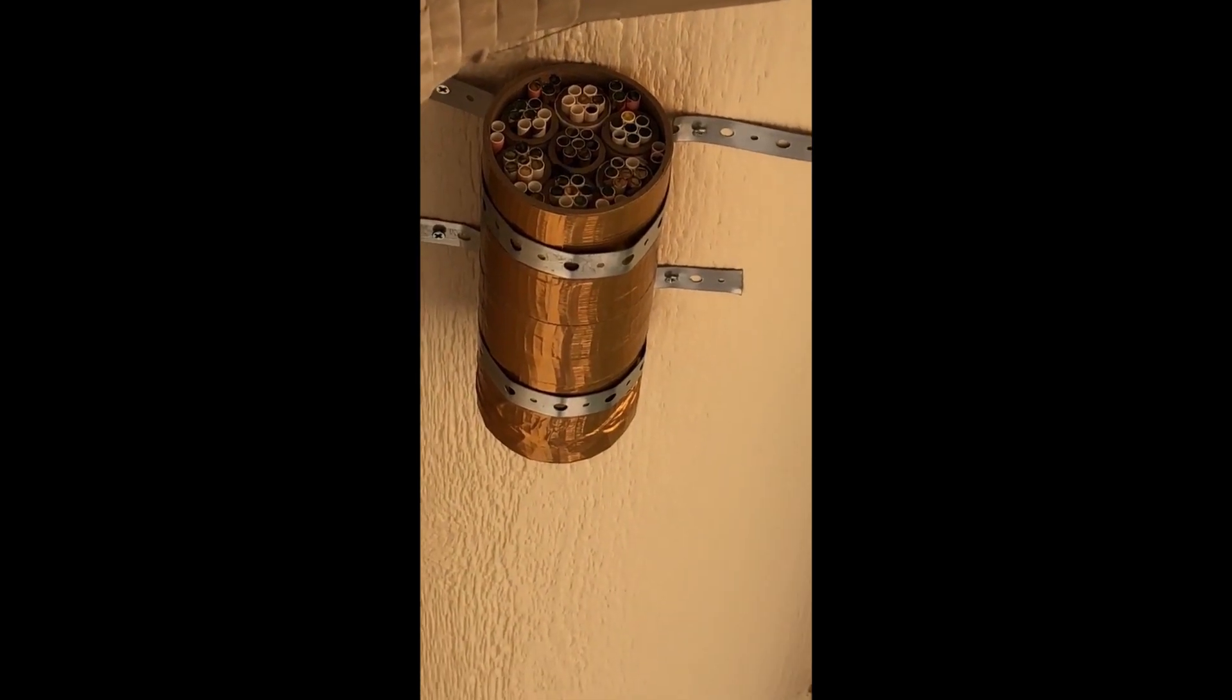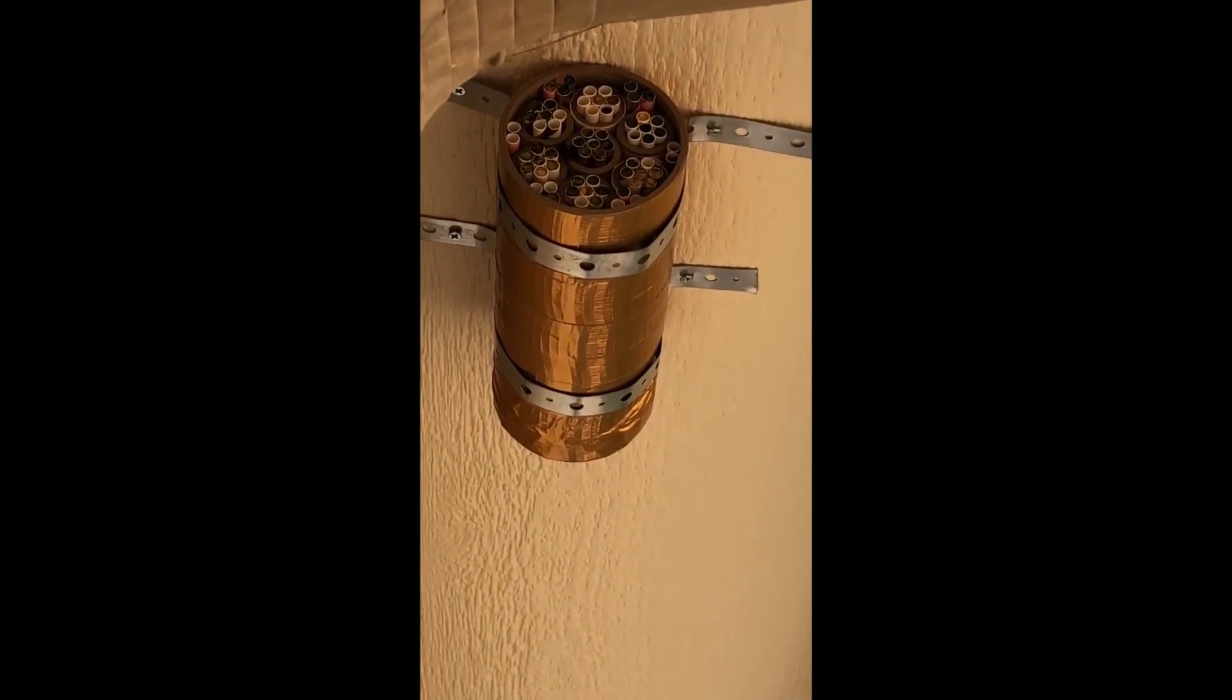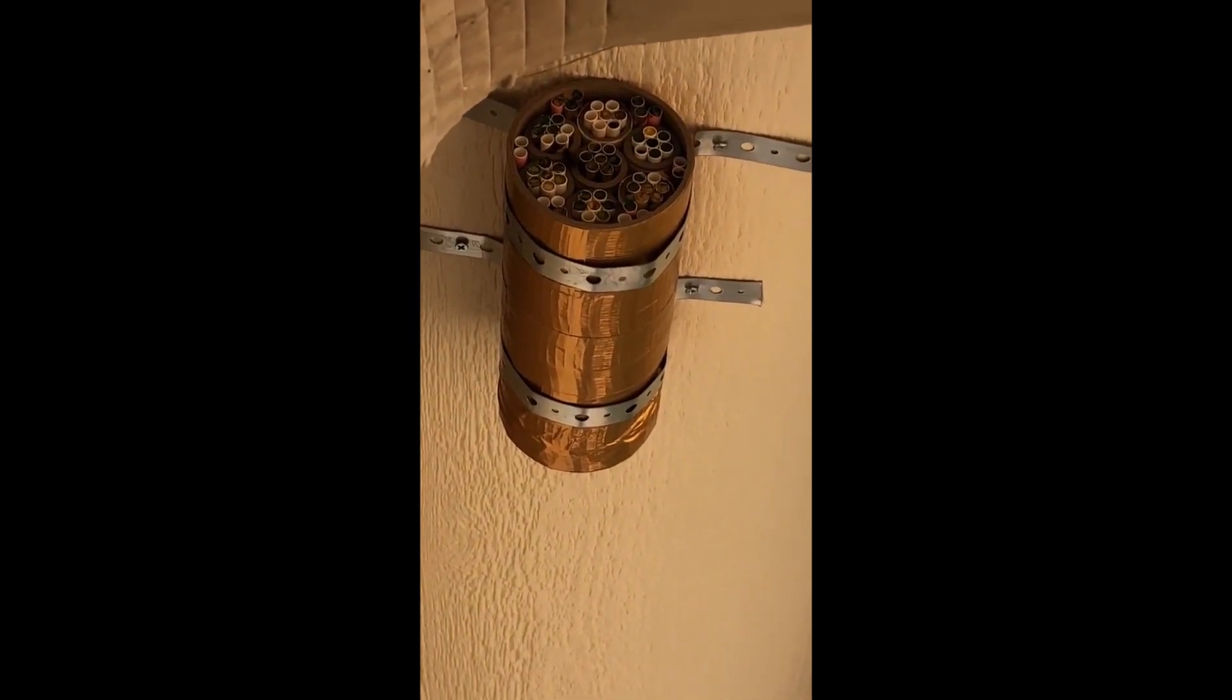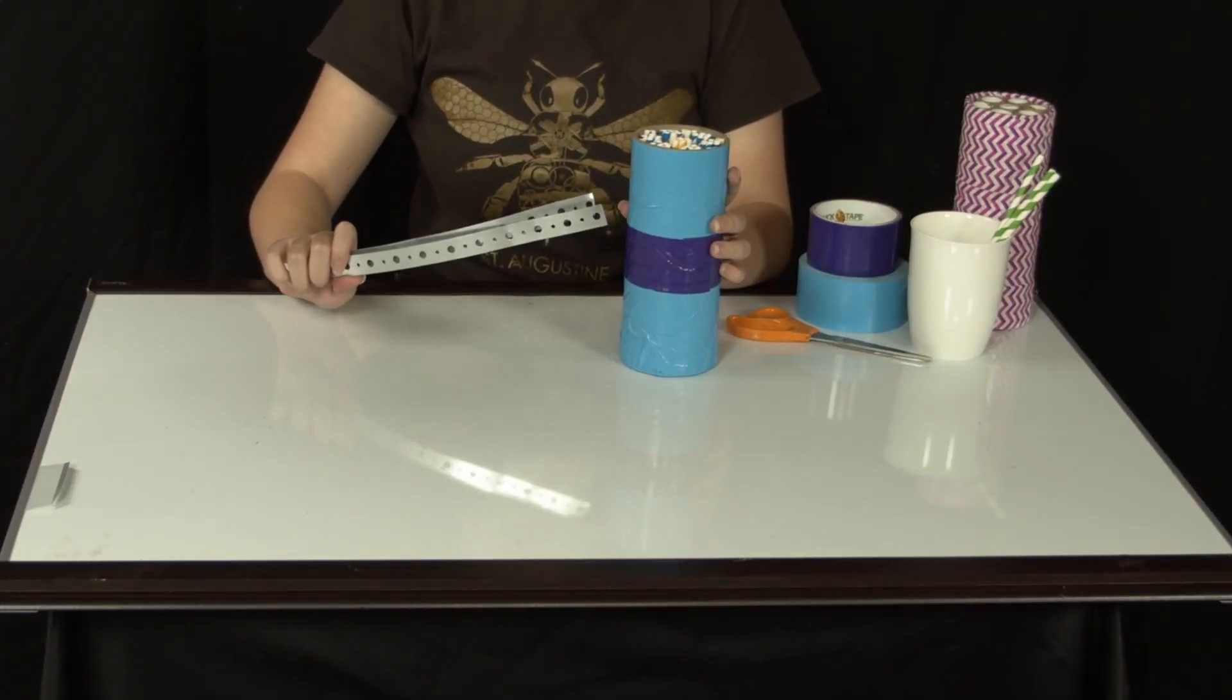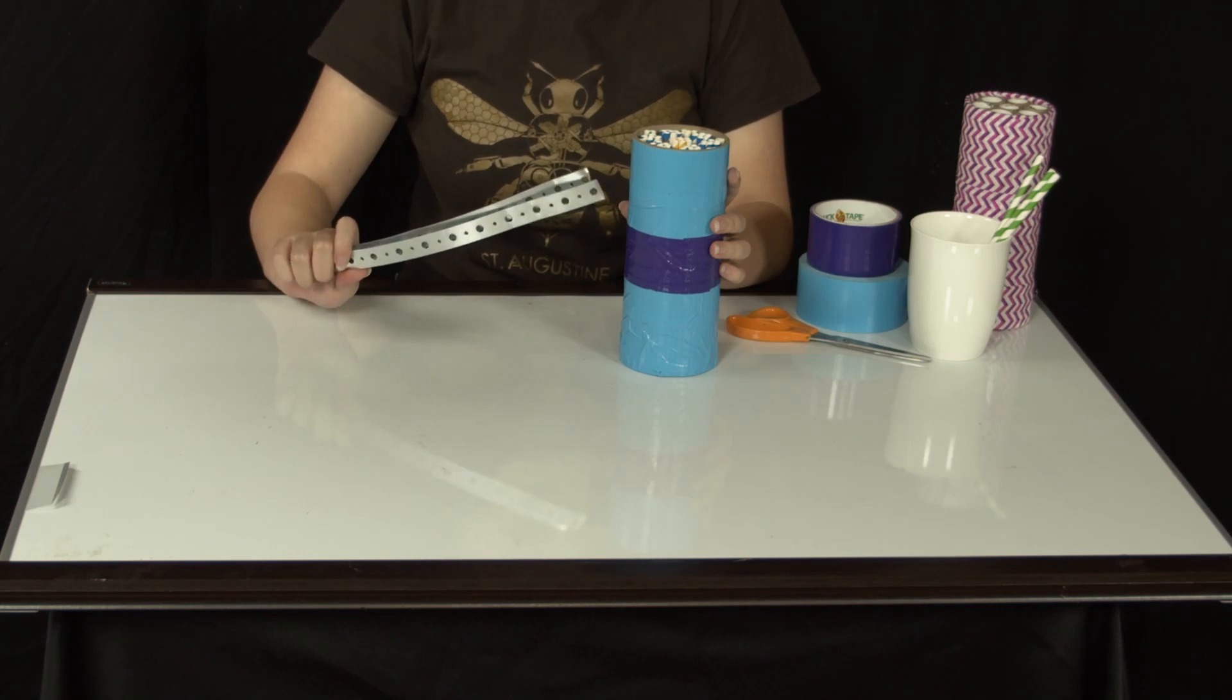The best place to mount one of these habitats is under the eaves of your house, but anywhere is fine as long as they are placed firmly. We used these metal hanger straps which we shaped around the bee box and drilled into our house.